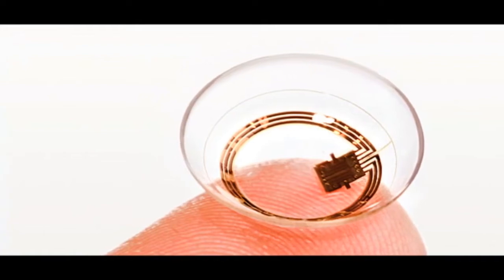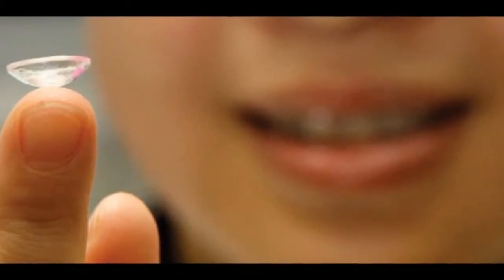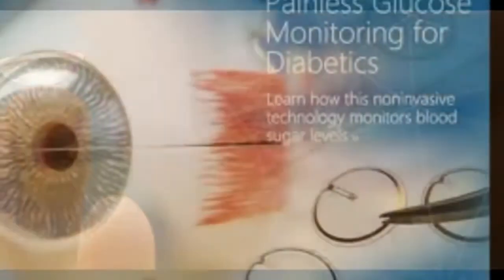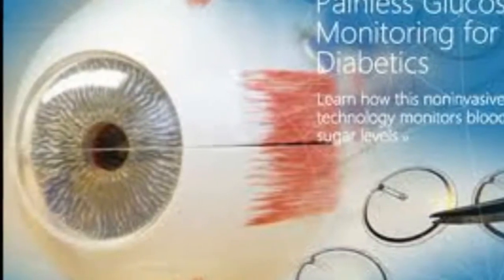The prototype, which Google says will take at least 5 years to reach consumers, is one of several medical devices being designed by companies to make glucose monitoring for diabetic patients more convenient and less invasive than the traditional finger pricks.